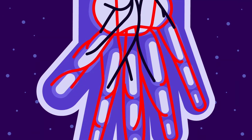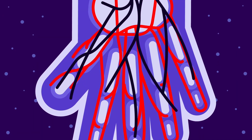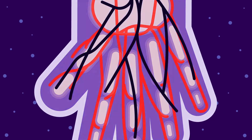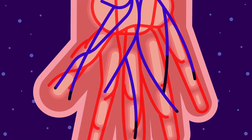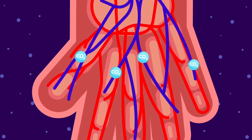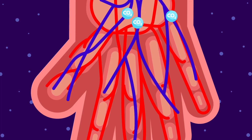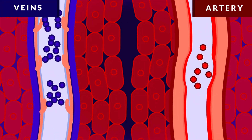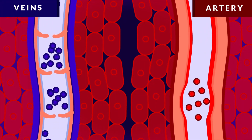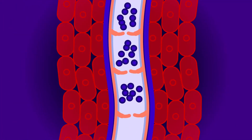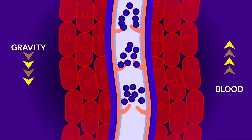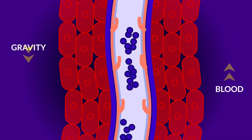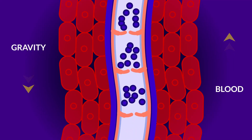Veins are located nearer to the body's surface. They appear bluish red, as veins carry deoxygenated blood. Only veins have valves, as they take the blood back to the heart against gravity, and it is not with much pressure.